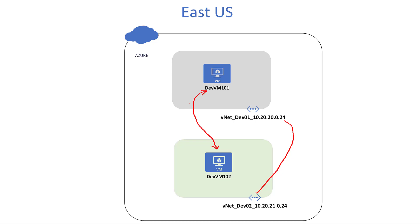In this particular scenario, vm101 and vm102 are in the same Azure subscription within the same region — East US. In subsequent videos we'll look at global vnet peering, where virtual networks are in different regions — for example dev01 vnet in East US and dev02 vnet in West US. For now, let's jump into the Azure portal and set up virtual network peering.